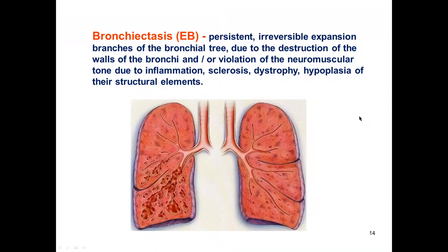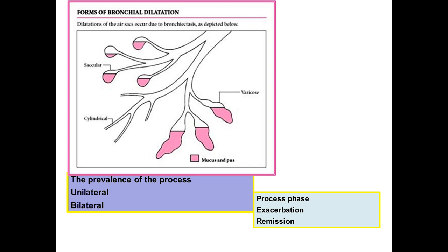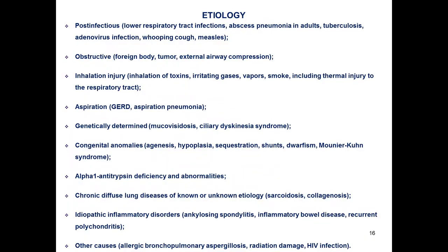The next pathological condition is bronchiectasis, or pathological bronchial dilation — a persistent expansion of branches of the bronchial tree due to the destruction of the walls of bronchi and/or violation of neuromuscular tone, due to inflammation, sclerosis, dystrophy, or hypoplasia of their structural elements. According to the form of bronchial dilation, there are saccular, cylindrical, and varicose forms of bronchiectasis. According to prevalence, the process may be unilateral or bilateral, and by disease phase, may be in exacerbation or remission.